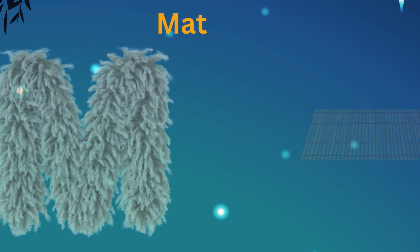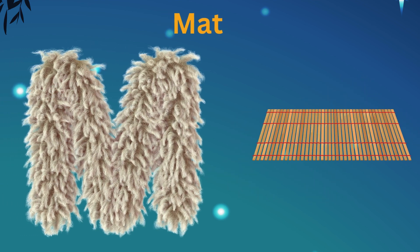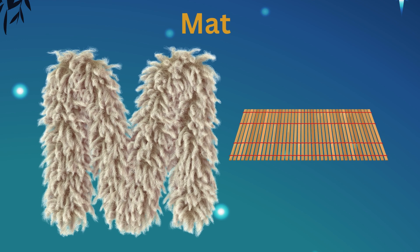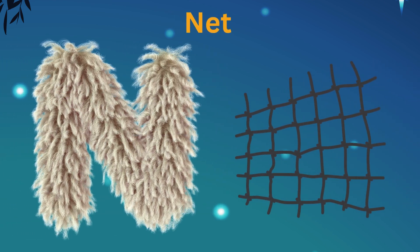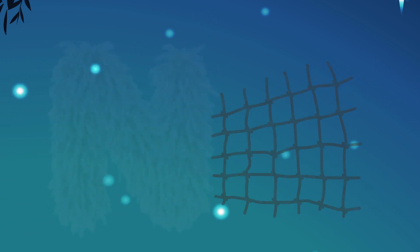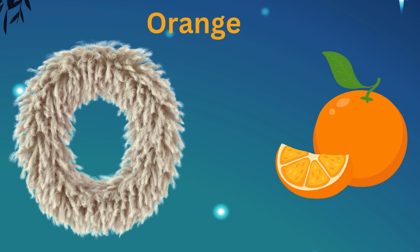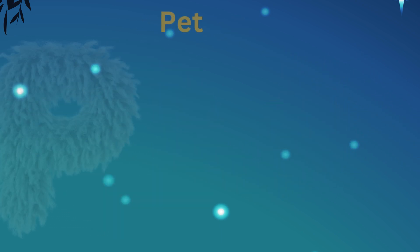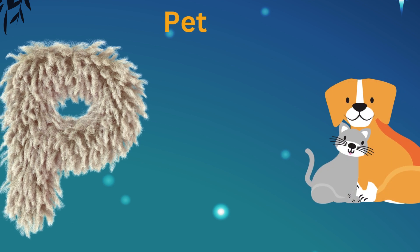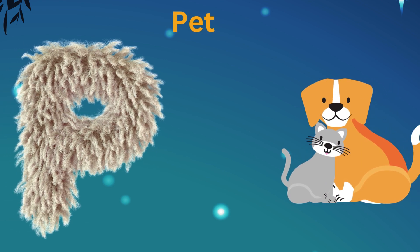M is for Monkey, M-M-Monkey. N is for Net, N-N-Net. O is for Octopus, O-O-Octopus. P is for Parrot, P-P-Parrot.